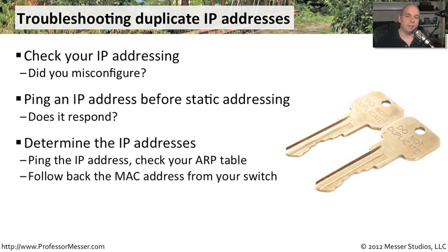If you have a duplicate set of IP addresses on the network, you can ping that IP address and you're going to get an ARP response from one device or the other. You can look at your ARP table to see what your machine thinks is associating that IP address to whose MAC address. At that point, you can go to your switch, which has a big table of different MAC addresses, and begin tracing back what port on the switch is connected to that MAC address. Finally, you can find one of those stations with that IP address, disconnect it from the network, then repeat the process to find the other MAC address and both systems sharing the same IP.